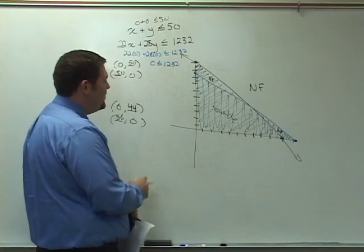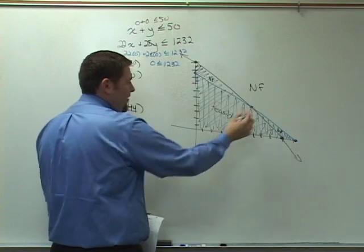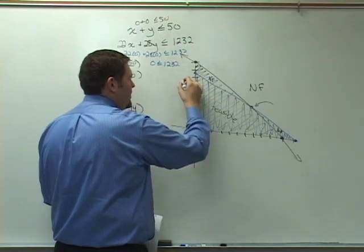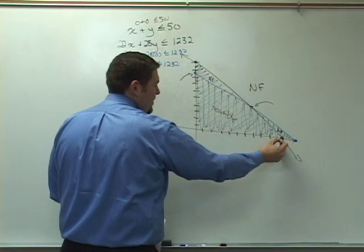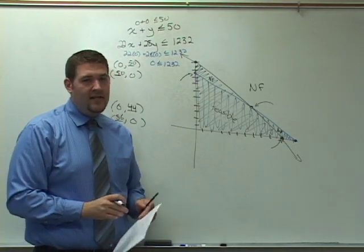All right. That's how we graph this with the constraints. What we're going to talk about next time we get together is that point, this point, and this point, known as the vertices of a feasible region. We'll get to that next time.